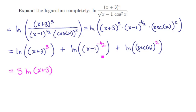On the second expression, pull that minus 1/2 out: minus 1/2 times the natural logarithm of (x minus 1). And on the third expression, the 2: so 2 times the natural logarithm of secant of x.